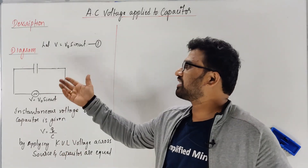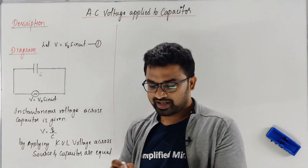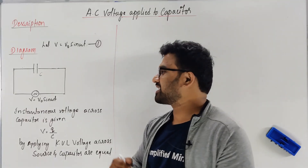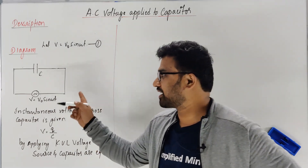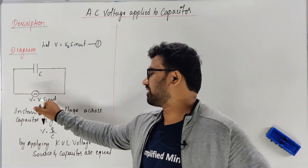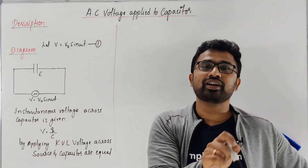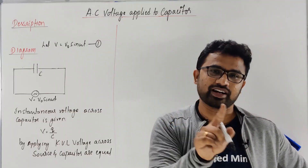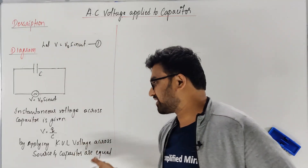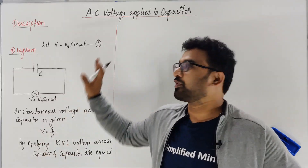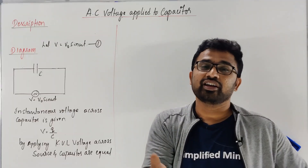For example, consider a capacitor of capacitance C connected to an AC voltage source — not DC, an AC voltage source — as shown in the figure. Let the voltage be V = V₀ sin(ωt). The concept is the same as the previous video. I will add the expression derivation here, covering equation derivation, differentiation, and integration.